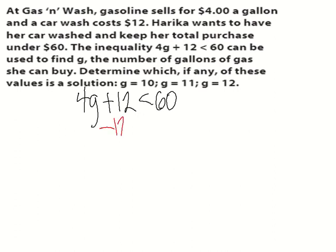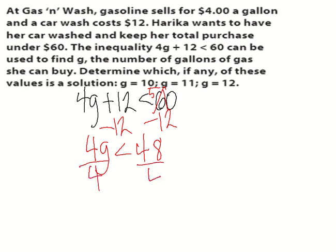So we're going to first subtract 12. We get 4g less than 48. All right, don't forget to borrow. I got 48. And then we're going to divide by 4. And we got g less than 12. Okay, I didn't flip it because I didn't divide by a negative.